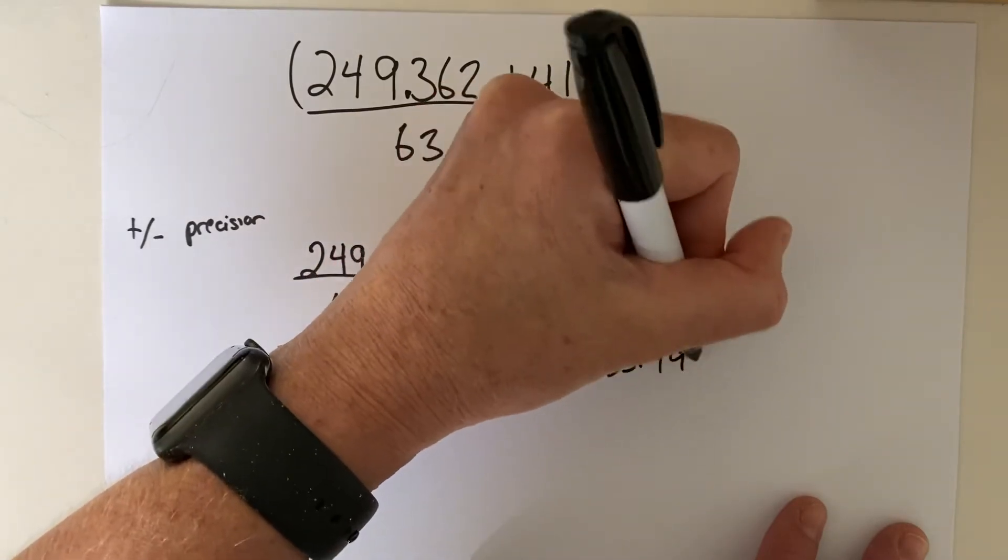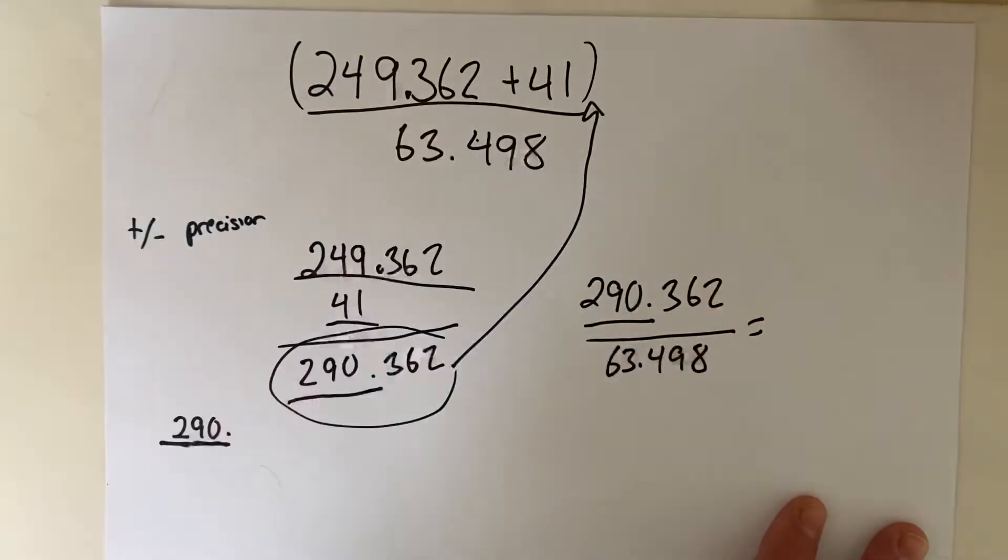And we get 290.362 divided by 63.498, and we get 4.5728.